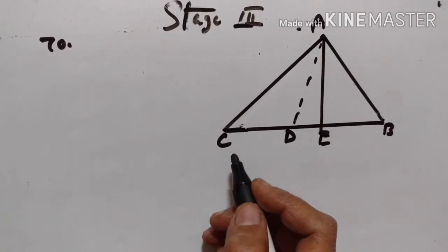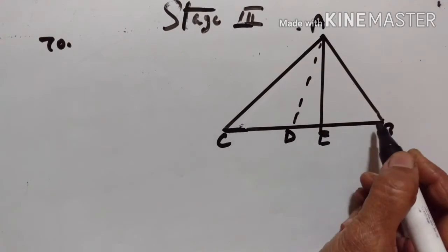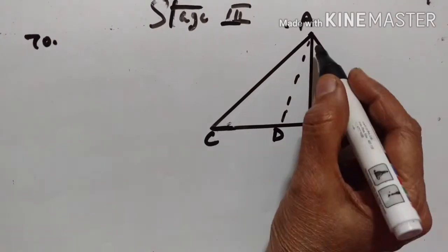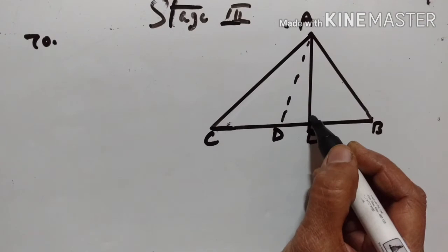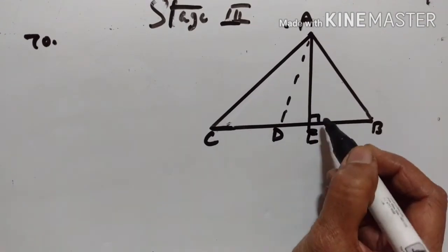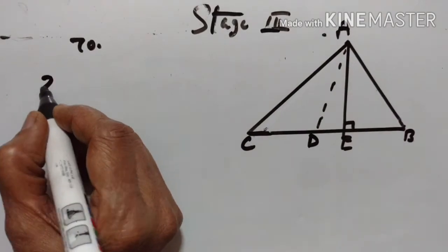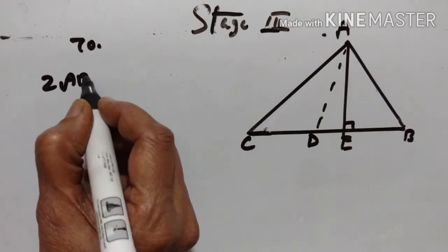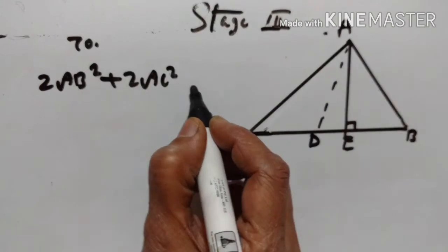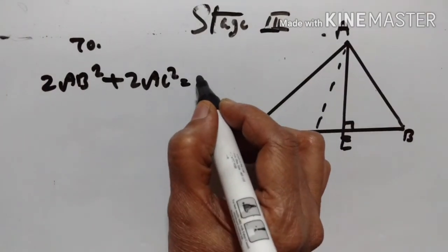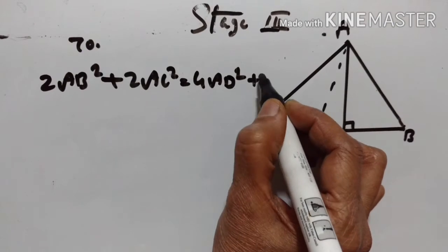Problem number 70. This figure shows a triangle ABC in which AD is the median and AE is perpendicular to BC. We have to prove that 2AB squared plus 2AC squared is equal to 4AD squared plus BC squared.